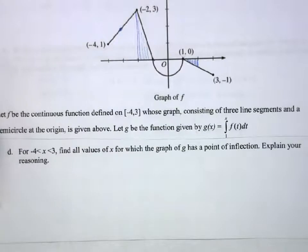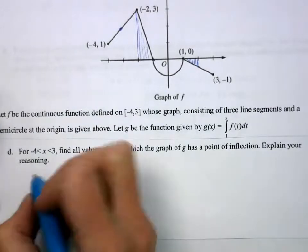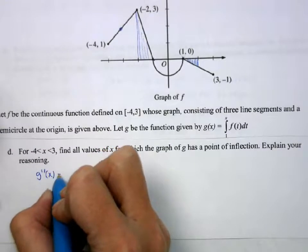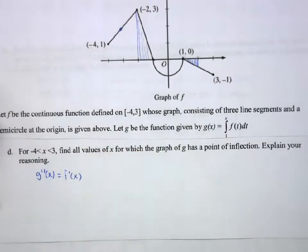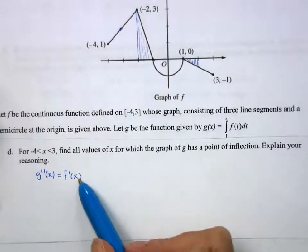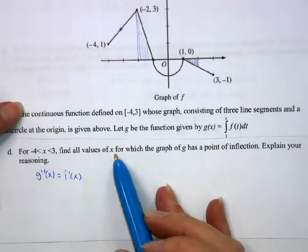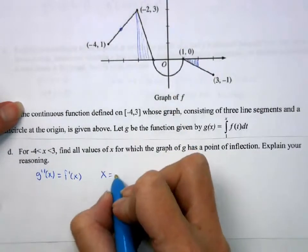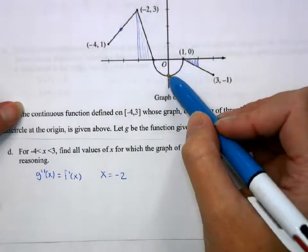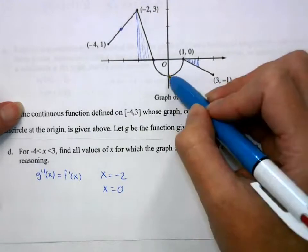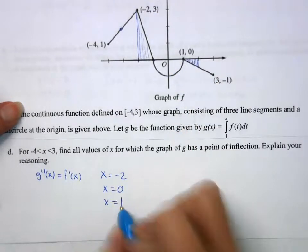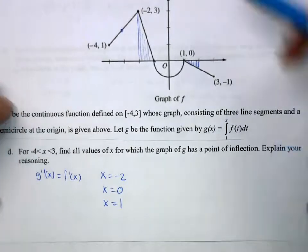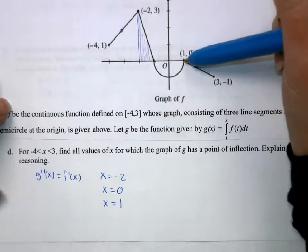For negative 4 less than x less than 3, find all values where g has a point of inflection. That's when g double prime of x, which equals f prime of x, changes sign — meaning where the slope of f changes sign. At x equals negative 2, the slope changes from positive to negative. Then it changes again around x equals 0, and again at x equals 1. Even though the derivative may not exist at those corners, the second derivative changes signs because f is continuous.